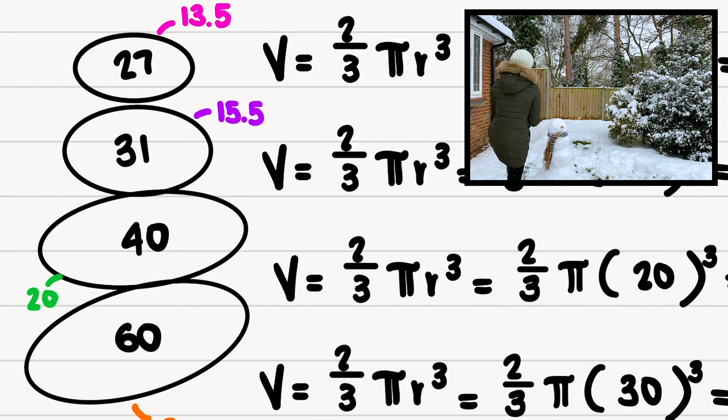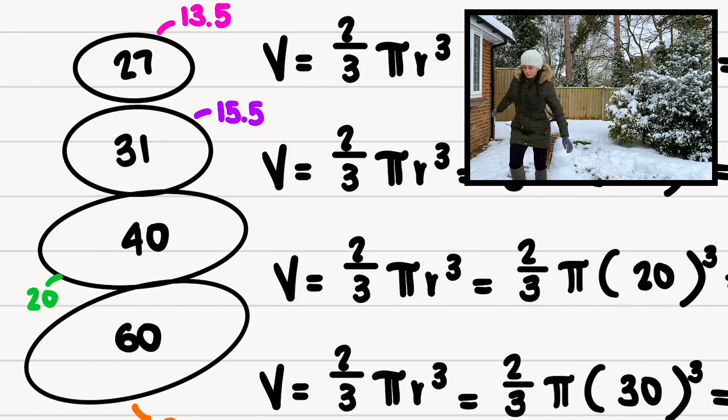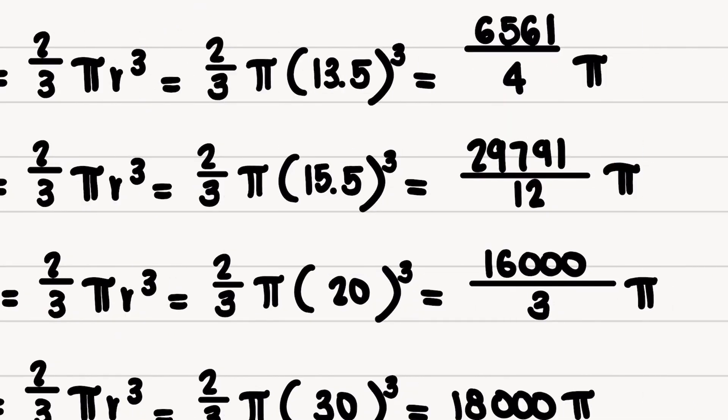That gave me radii of 13.5, 15.5, 20, and 30. So my head came to 6,561/4 π, then 29,791/12 π, 16,000/3 π, and 18,000 π. I kept it all as pi just to make it easier.